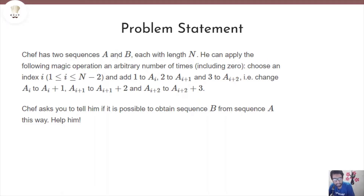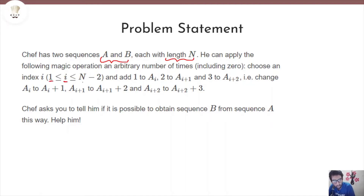Here it's given that CHEF has two sequences A and B, and both these sequences are of length n. He can apply the following magic operation an arbitrary number of times including 0. In each magic operation, he selects an index i, where i is between 1 and n-2. After selecting this index i, he adds 1 to A[i], 2 to A[i+1], and 3 to A[i+2].